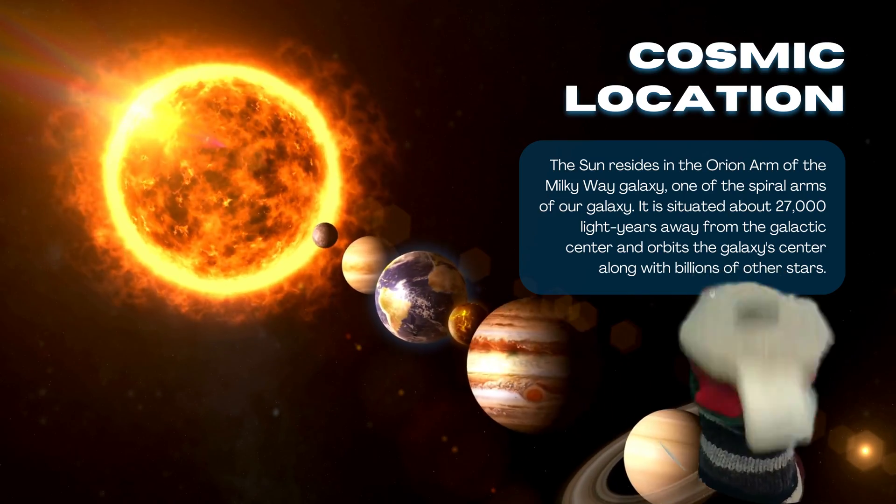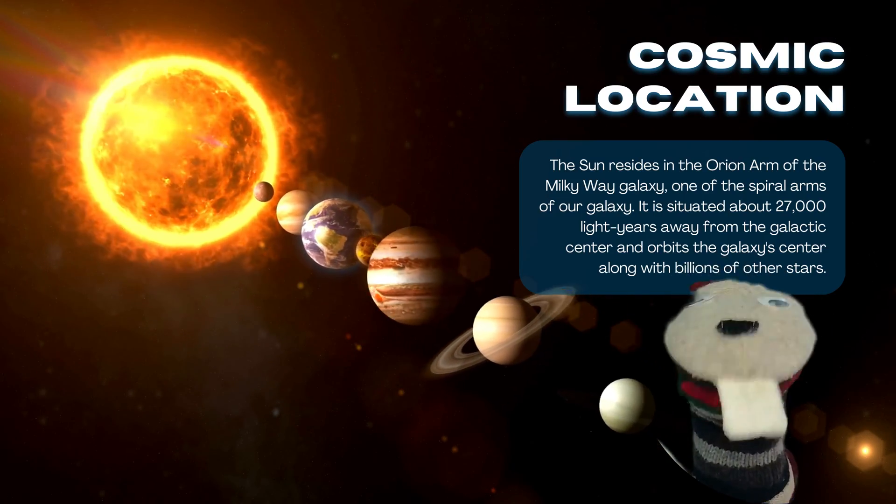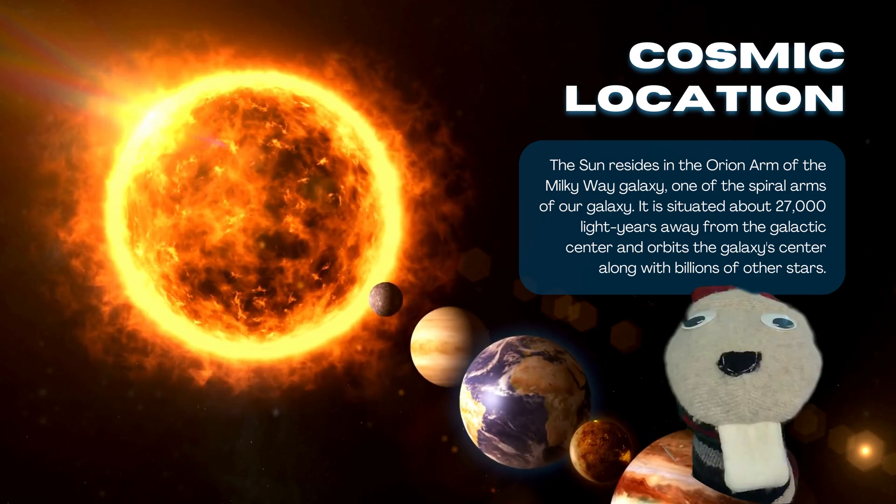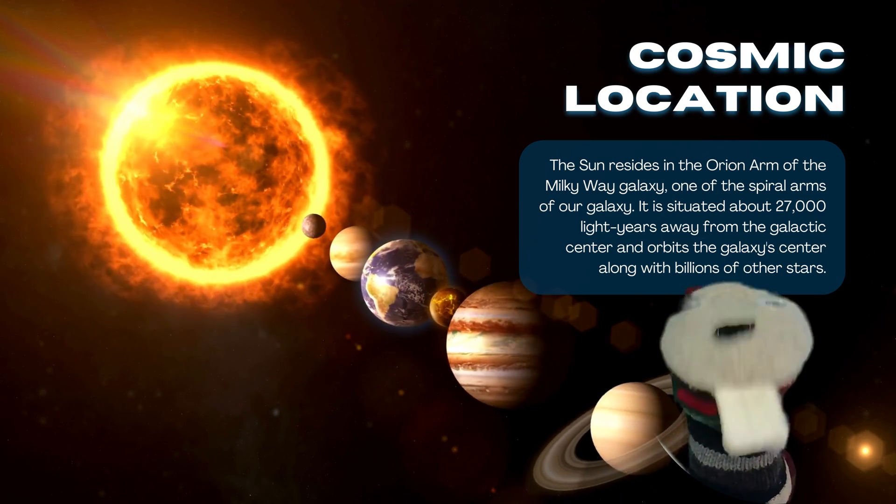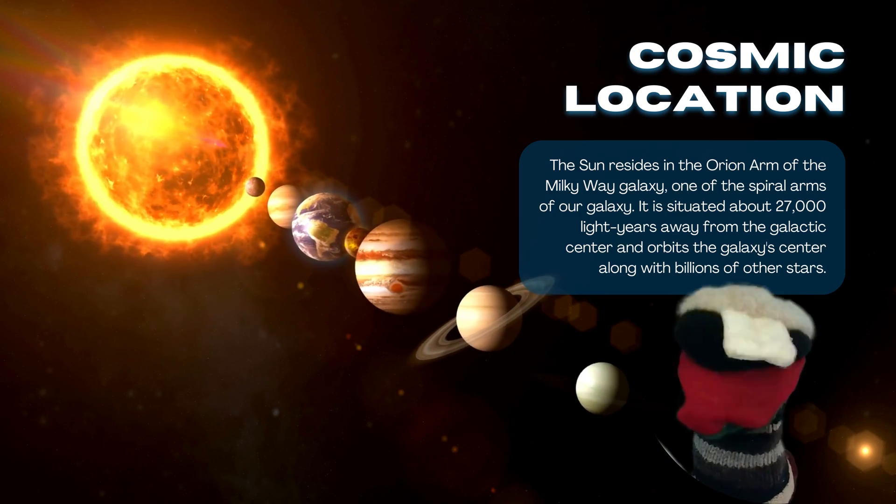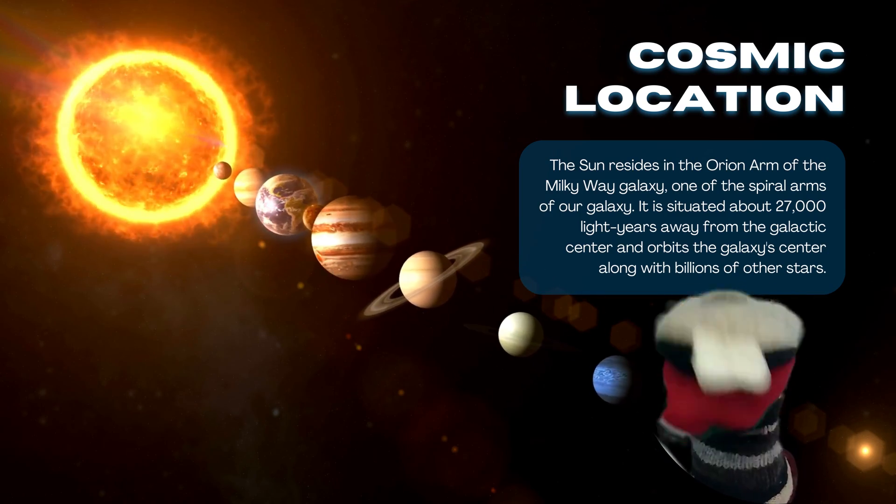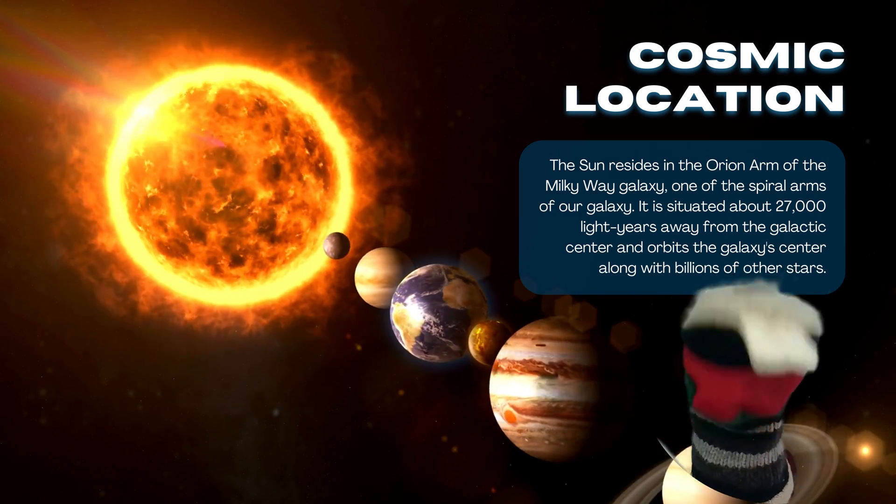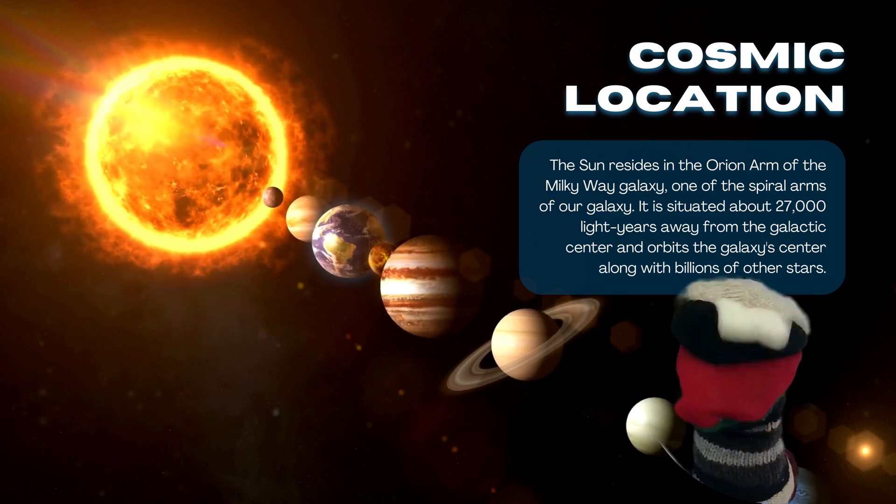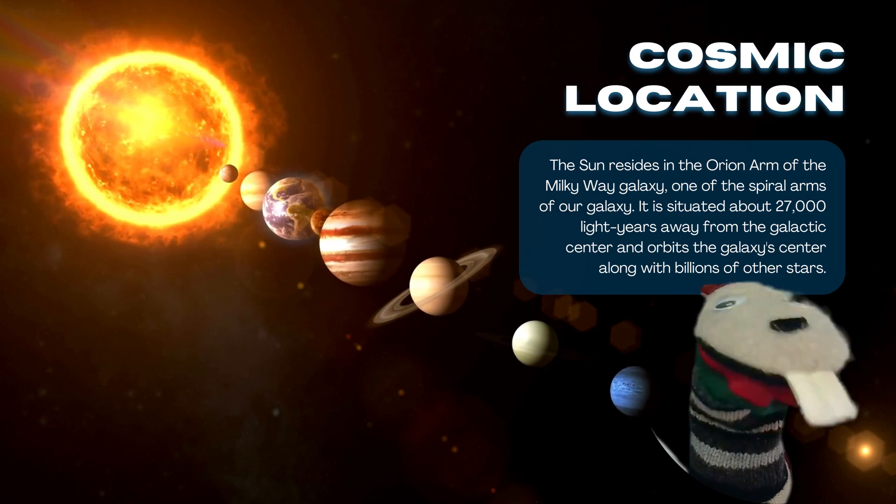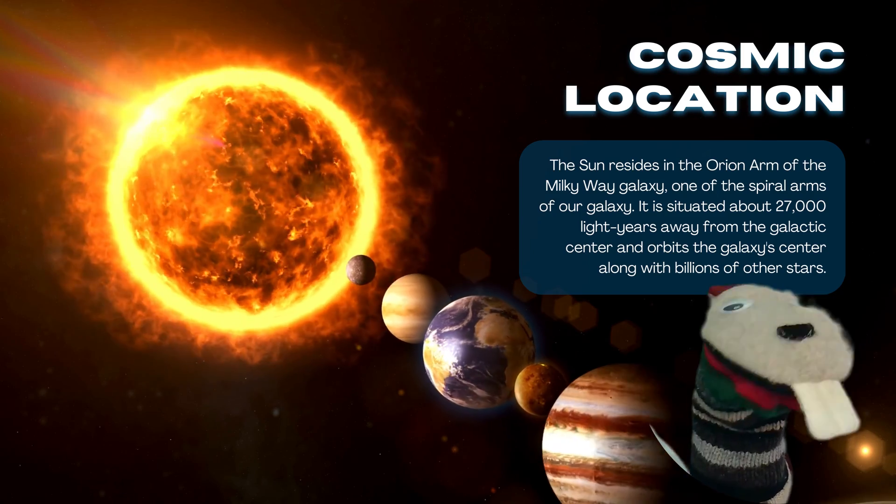The sun is in the spiral arm of our galaxy. You can see it right there. It's situated about 27,000 light years away from the galactic center, and it orbits the galaxy center along with just a billion of other stars.